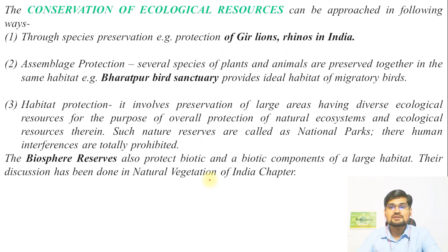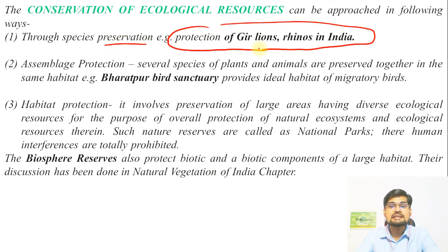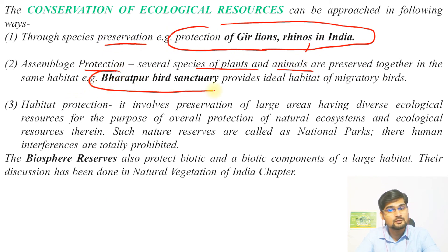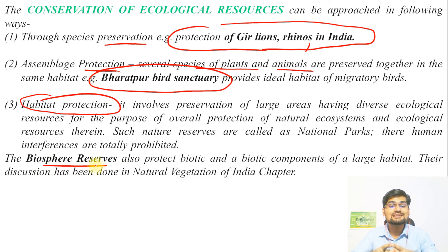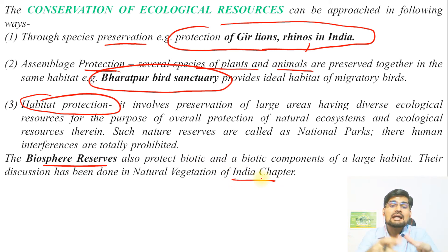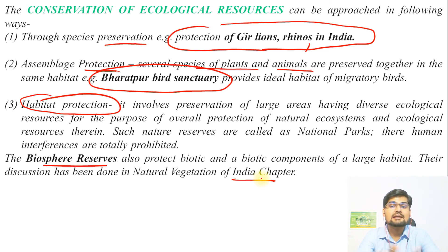Conservation of ecological resources can be approached in different ways. Species preservation involves declaring protected areas, such as for Gir lions or rhinos in India. Assemblage protection preserves several species of plants and animals together in habitats like the Bharatpur Bird Sanctuary. Habitat protection is carried out through national parks, bird sanctuaries, and biosphere reserves, where the habitat of particular species is protected. Conservation and preservation approaches are applied in an integrated manner depending on the system being managed.